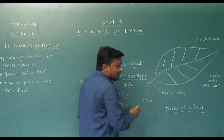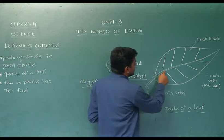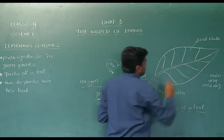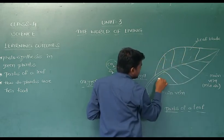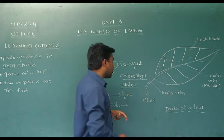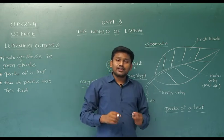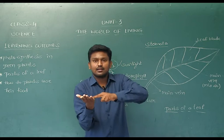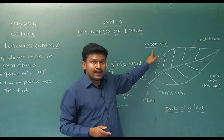This part is called the stalk, and it is connected to the stem of the plant. This is the main vein — you can see this is the main vein, also called as midrib. And these are lateral veins. The space is called the leaf blade — this complete space, the space between the veins, is called the leaf blade. And among all these, there is one important part of the leaf: stomata. Stomata is nothing but a hole under the leaf, generally present on the lower part of the leaf.